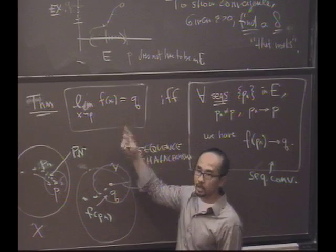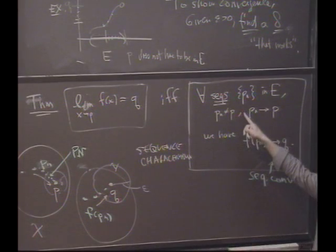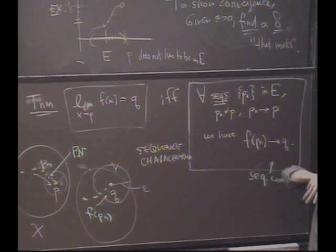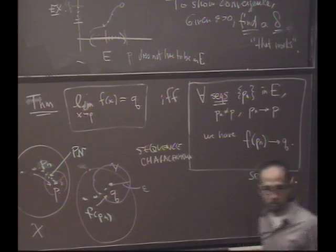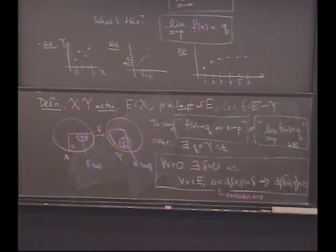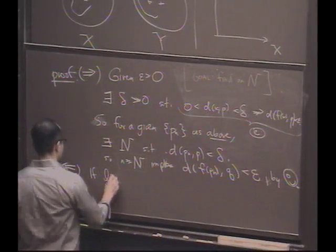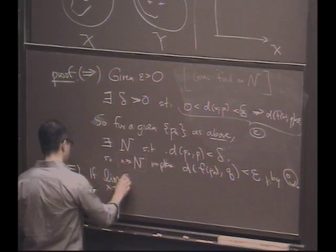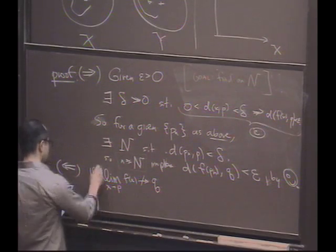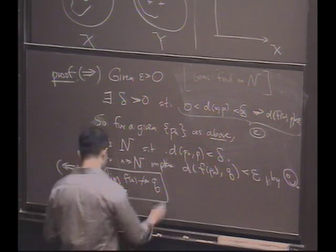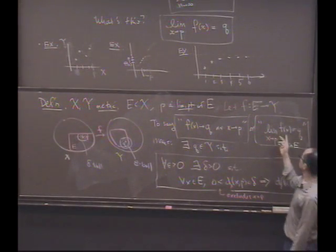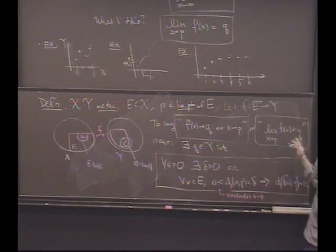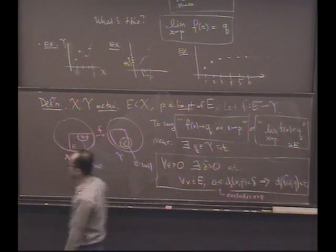Suppose the limit's not Q. What's my goal? Show that — what's the opposite of 'for all sequences'? There is a sequence for which all this is true, but this doesn't converge to Q. That's what we'll do. We can do that. So if the limit as x goes to P of F of x is not Q, then help me negate this. Let's negate this definition. To say the limit of F of x is Q means this.